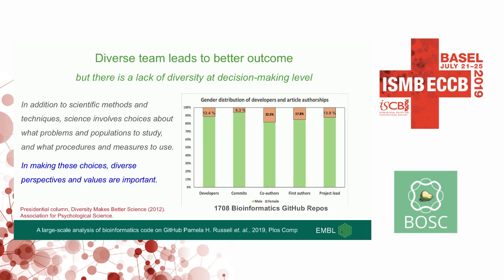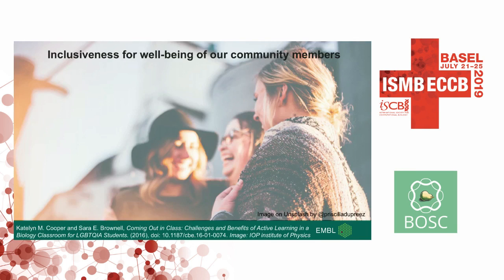However, we are also lacking diversity at the decision-making level. What you see in green are the repository contributors who are male, and in orange are the female contributors. This was done on 1,708 bioinformatics GitHub resources. This clearly shows that we really lack people who are leading projects or who are the first authors.